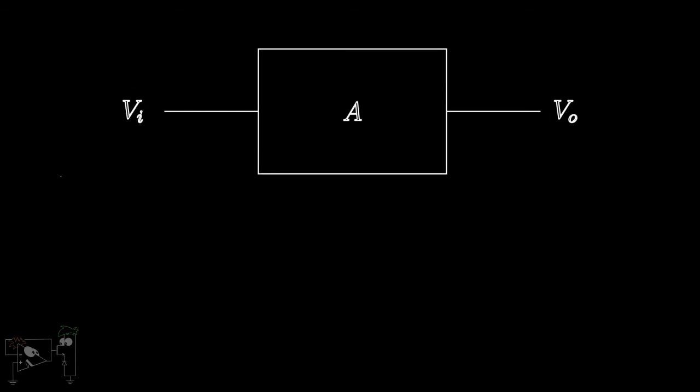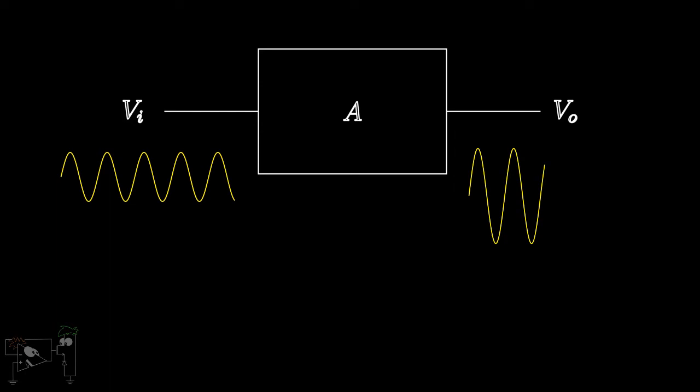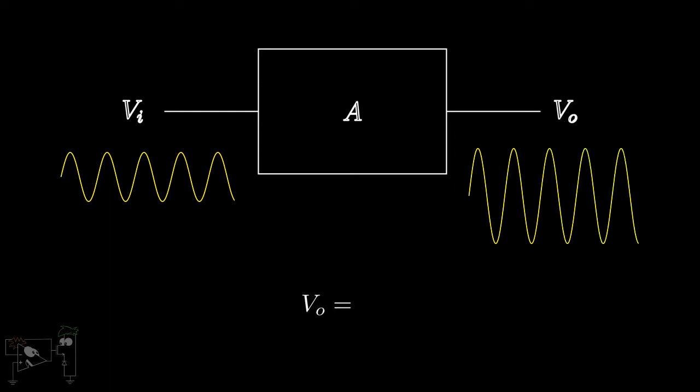Today we're going to take a look at what an operational amplifier is and some of the basic characteristics of an op-amp. But before we get to that, let's take a look at our regular amplifier, which I assume you must be familiar with. An amplifier is an electronic device used to increase the amplitude of a signal. So, suppose I have a signal VI at the input of my amplifier and the gain is A, then the output of the signal will be A into VI.